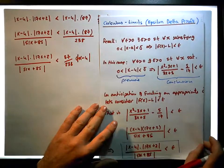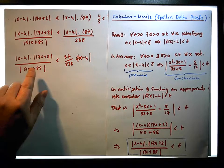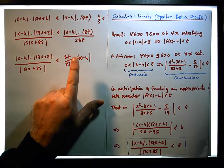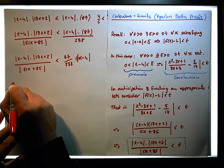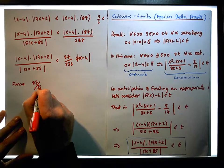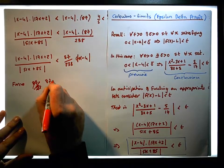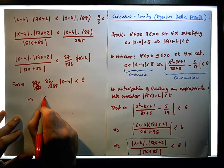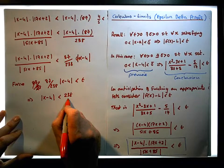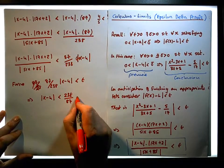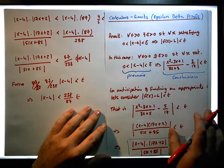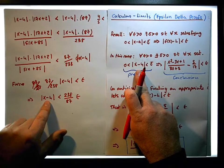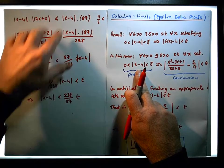Now what we need to make sure of is that this expression here is less than epsilon. So let's force 87 over 228 times x minus 4 to be less than epsilon. What does this tell us? This implies that x minus 4 must be less than 228 over 87 of epsilon. So now we have reduced our conclusion down to what we have from our premise — we now know that x minus 4 must be less than 228 over 87 of epsilon for this to actually work.